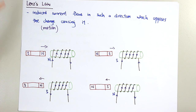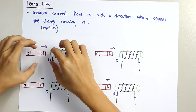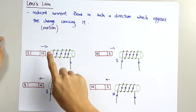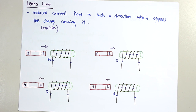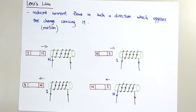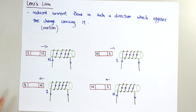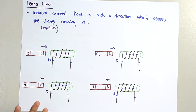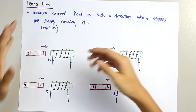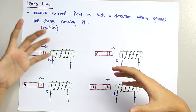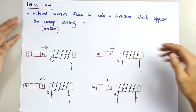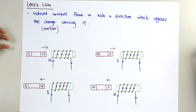Lenz's law is also basically a form of the law of conservation of energy. We can see that there is an opposing force occurring — you have to oppose the motion, so work must be done to overcome this opposing force. The work done to overcome the opposing force is converted into electrical energy, which creates the induced current. This is why Lenz's law is also considered a form of the law of conservation of energy.